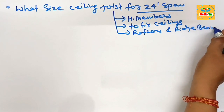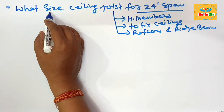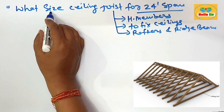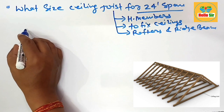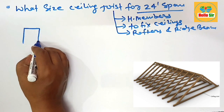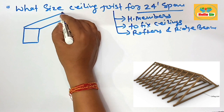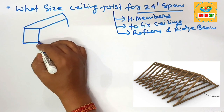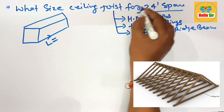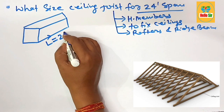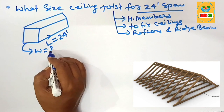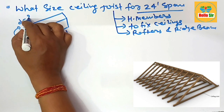To understand the different dimensions, the size of ceiling joist means you have to calculate the depth section and the width section. Here we make a rough diagram: this is the length section — the 24-foot span — this is the width section, and this is the depth section.